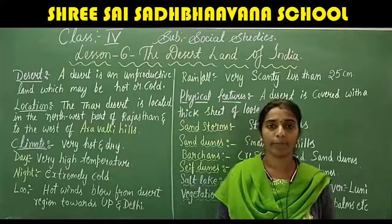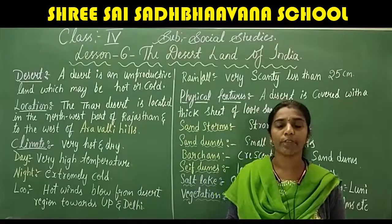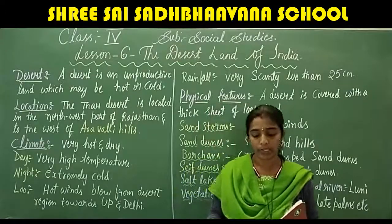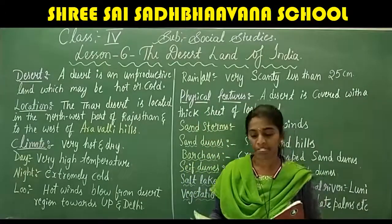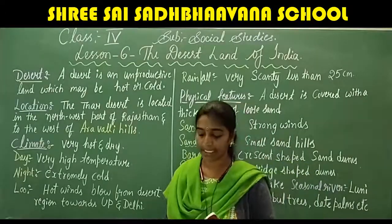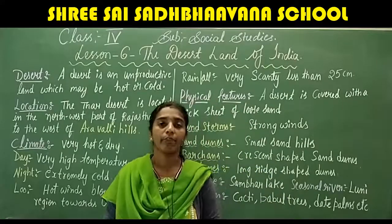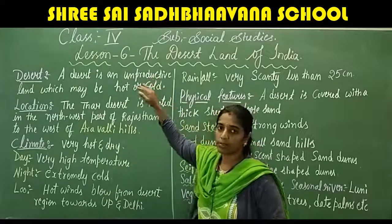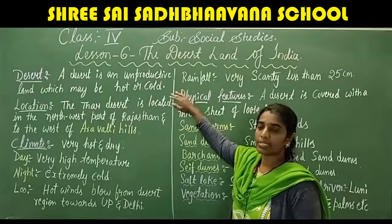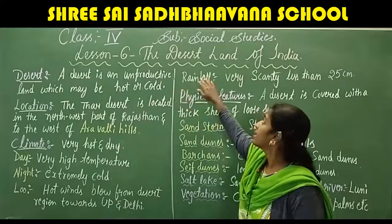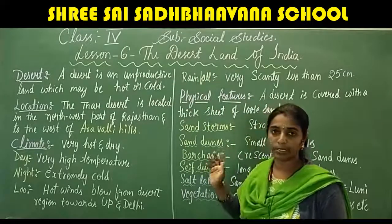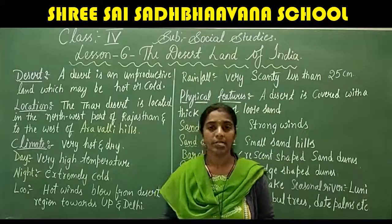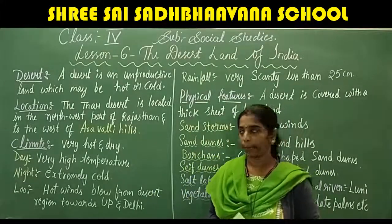Children, the first four physical features we have already studied under different lessons. So the last physical feature, that is the Great Indian Desert — the Thar Desert — we are going to study under lesson number six today. The lesson is called the Desert Land of India.